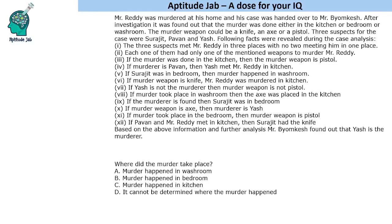Hello everyone, welcome to Aptitude Jab. This is a set based on conditionals. Mr. Reddy was murdered at his home and his case was handed over to Mr. Byomkesh. There are three possible places where the murder could have happened, three possible weapons, and three suspects as well.